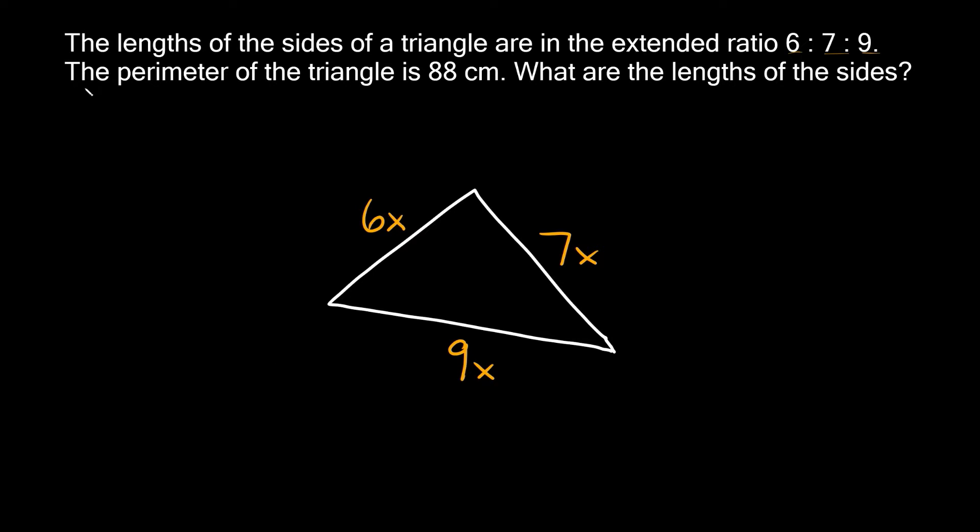But the problem does tell us that the perimeter of the triangle is 88 centimeters. So if we add up all three sides, they should add up to 88. So let's add these three up: 6x plus 7x plus 9x equals 88.